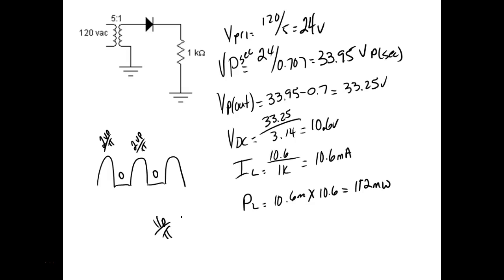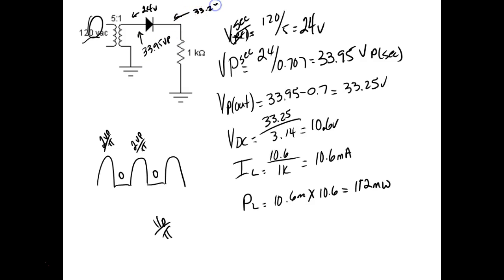So we're putting 120 volts in here and we're getting 24 volts RMS on the secondary. But remember, we don't use RMS to calculate average DC voltages — we use the peak. So 24 volts RMS gives us 33.95 volts peak. We call this V peak out, which would be 33.25 volts peak, which gives us an average voltage of 10.6 volts DC.